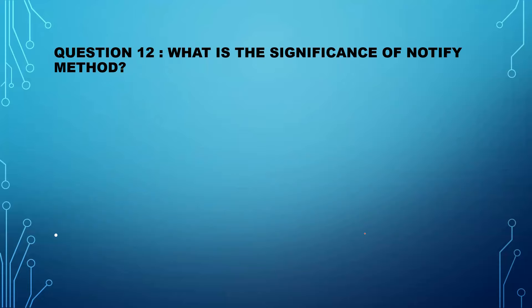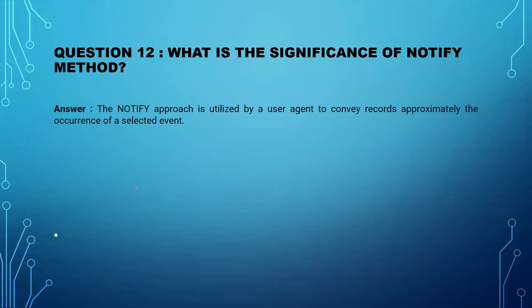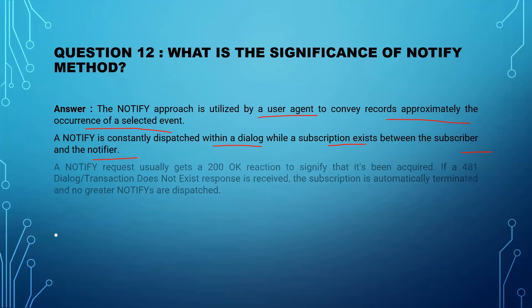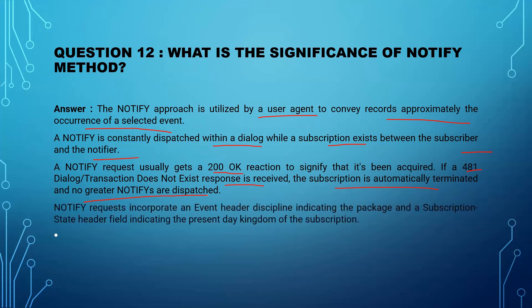What is the significance of the NOTIFY method? The NOTIFY method is used by a user agent to convey information about the occurrence of a selected event. NOTIFY is always dispatched within a dialogue while a subscription exists between the subscriber and the notifier. A NOTIFY request usually gets a 200 OK response. If a 481 — dialogue/transaction doesn't exist — response is received, the subscription is automatically terminated and no more NOTIFYs are dispatched.